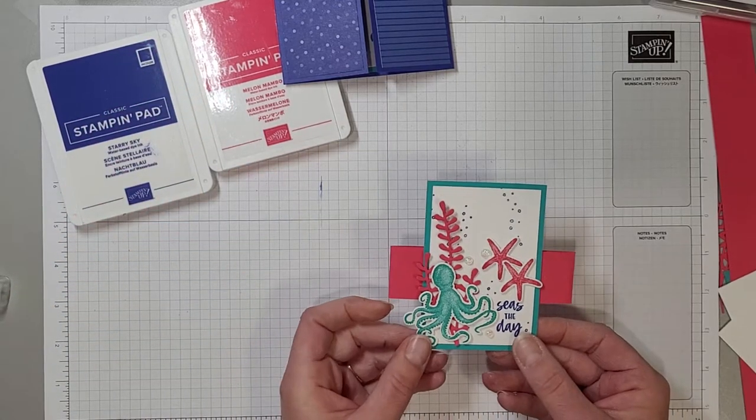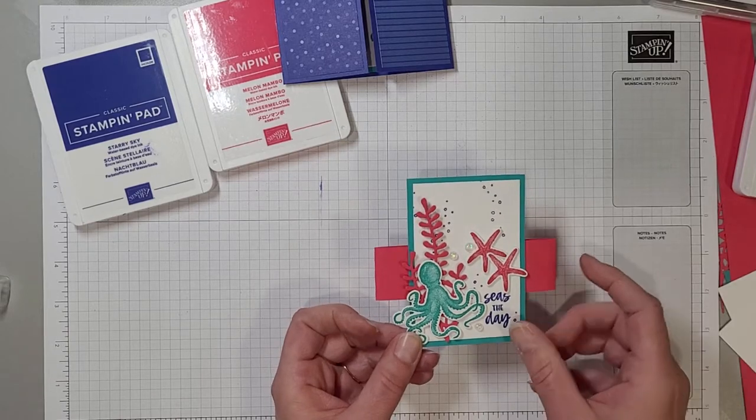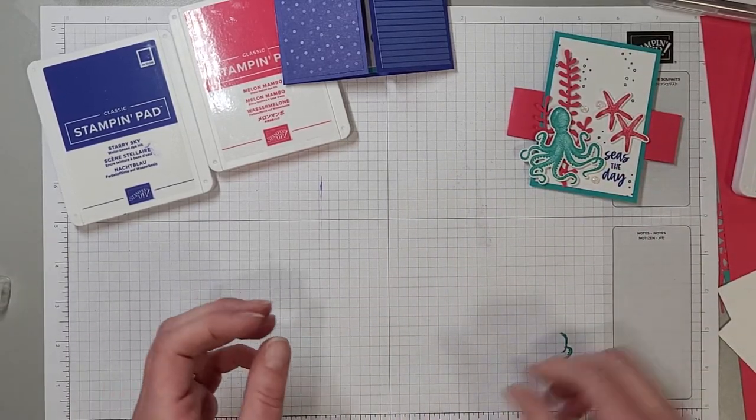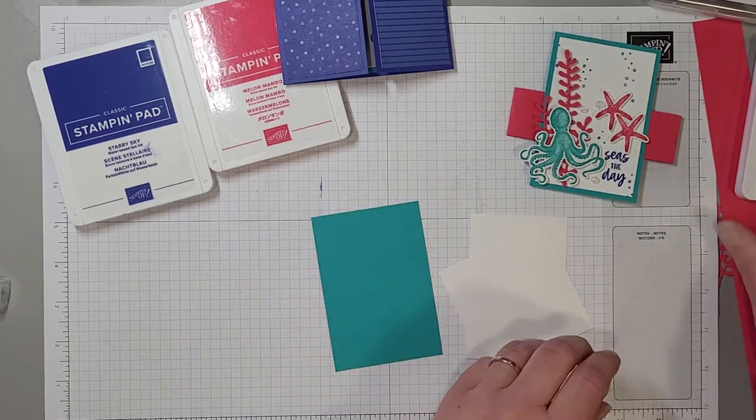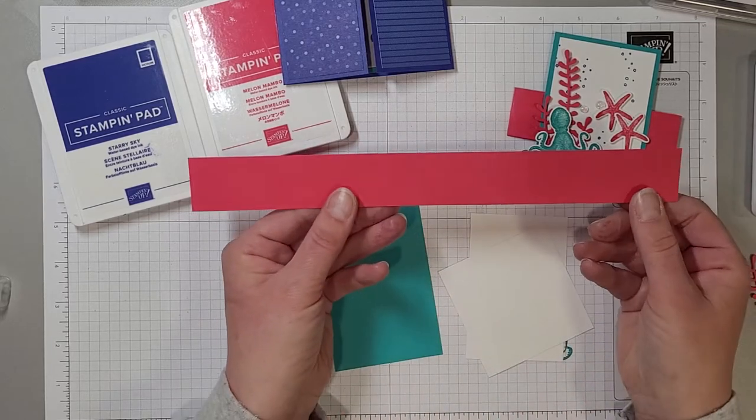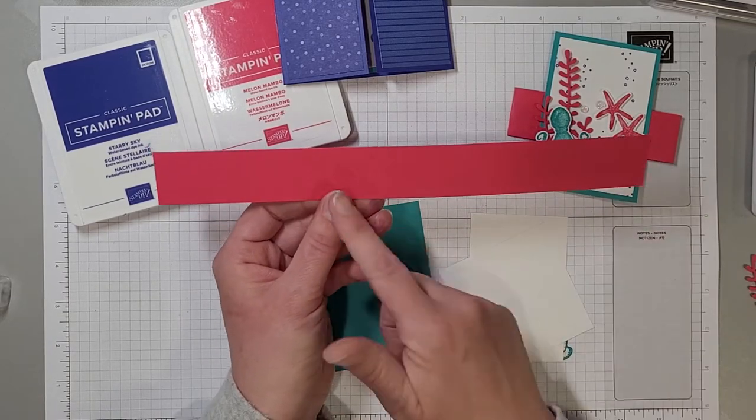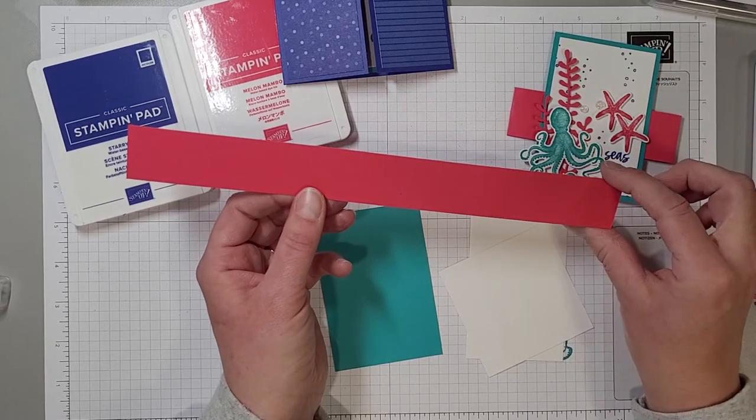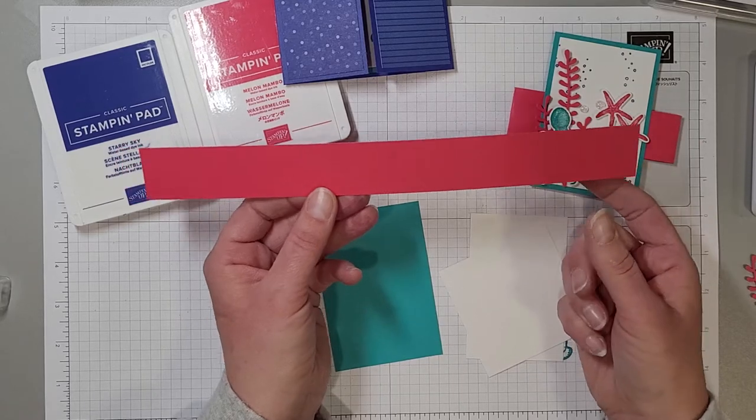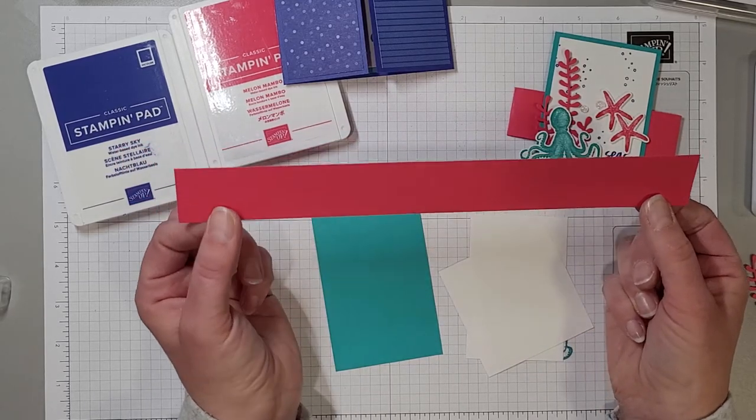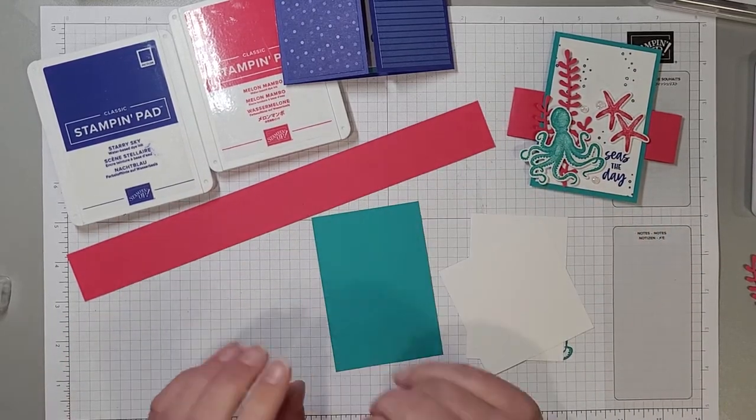And now we're going to create our belly band. We have got some pieces here. First to create the belly band I've just taken a strip of Melon Mambo card stock that is eight and a half inches long by one and a quarter inches wide. It doesn't need to be this long, we are going to trim some of it off, but I like to keep it long so that I can make sure it fits perfectly and then trim it. So eight and a half by one and a quarter.